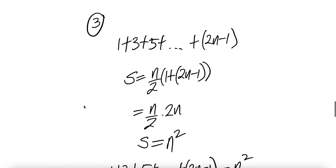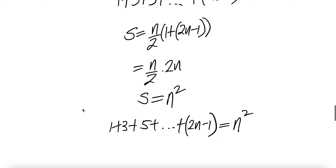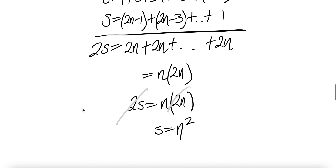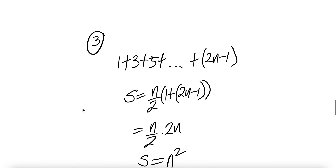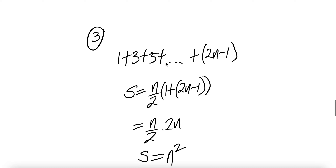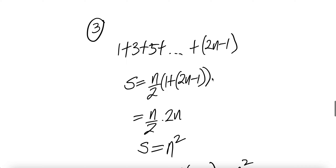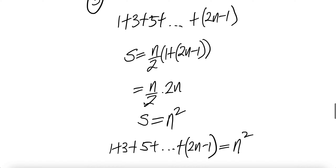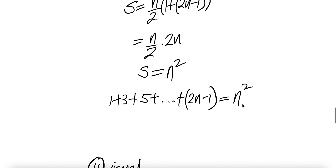Now let's look at the third way. We're going to add one plus three plus five all the way to the last term, using the AP formula where we know the first term is one, the number of terms is n, and if we know the value of the last term, the sum is n divided by two times the first term one plus the last term two n minus one. One and minus one cancel to give two n, then two and two cancel to give n, so the result is n squared.